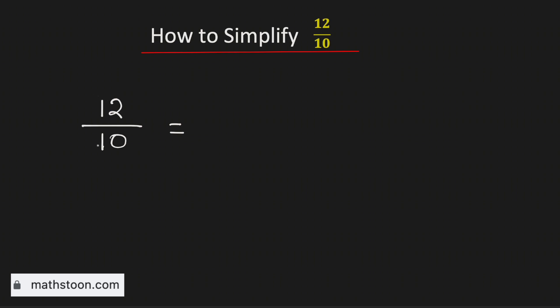See that both the numbers are even numbers, so we can write them as a product of 2 and something. 12 can be written as 2 times 6, and 10 can be written as 2 times 5.